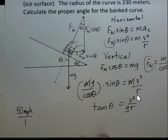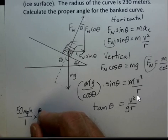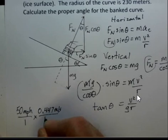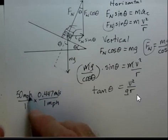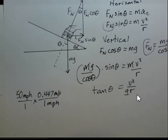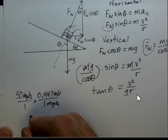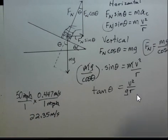So 50 miles an hour divided by 1 times 0.447 meters per second is 1 mile per hour. And use your calculator, multiply those two numerators together, and the miles per hour cancels. We're left with 22.35 meters per second.